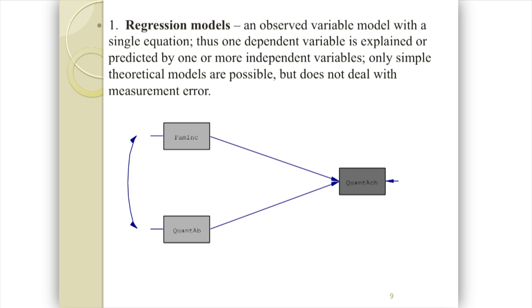Here we have a regression model. On the left we have two independent variables — family income and quantitative ability — which in turn influence quantitative achievement on the right, with an error term. The two independent variables are allowed to be correlated, shown by the curved line with an arrow at each end, meaning there's something outside the model that influences each of those.